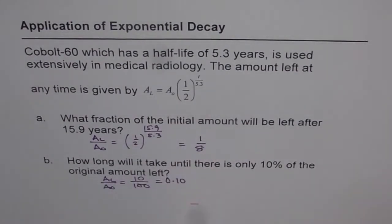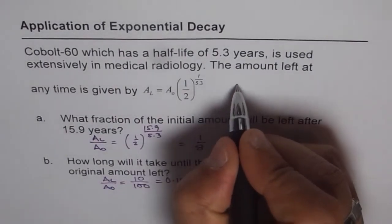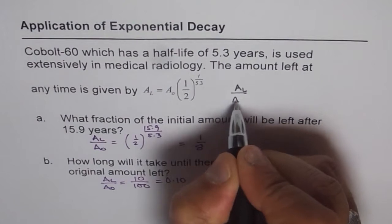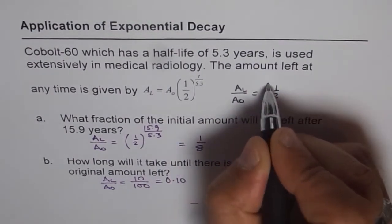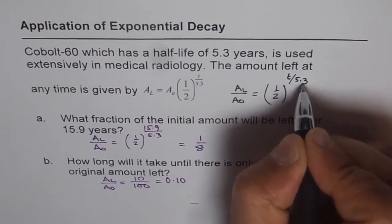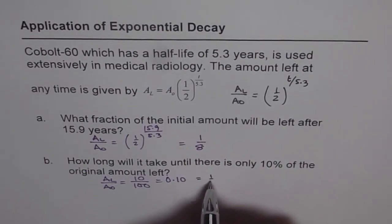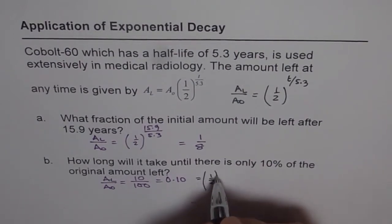Let me rearrange the formula. We have A_L/A_0 = (1/2)^(T/5.3). Applying this formula, we get 0.10 = (1/2)^(T/5.3).